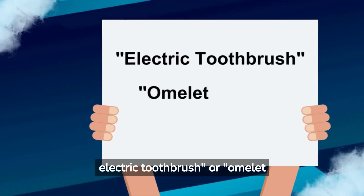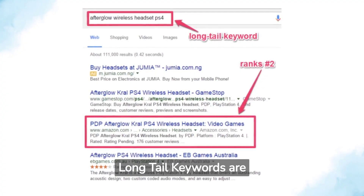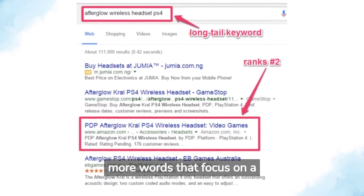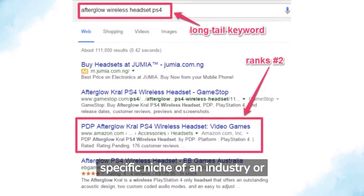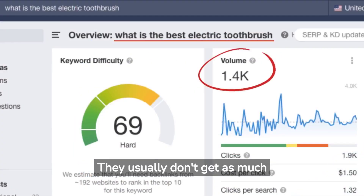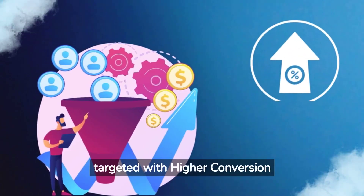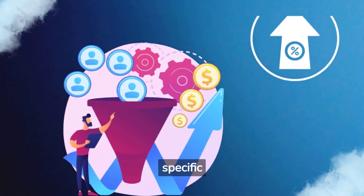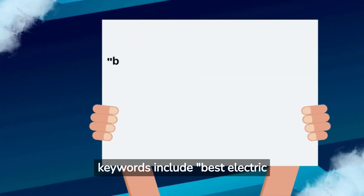Examples of short tail keywords include 'electric toothbrush' or 'omelet recipe.' Long tail keywords are longer phrases of three or more words that focus on a specific niche of an industry or topic. They usually don't get as much search volume as shorter words, but they tend to be more targeted with higher conversion rates because they are so specific.